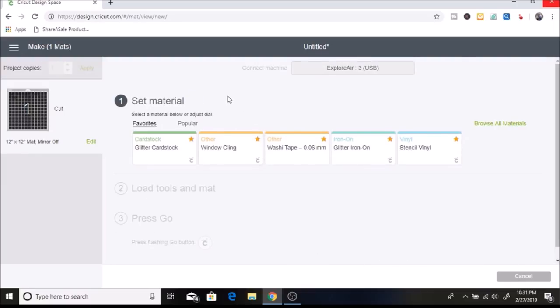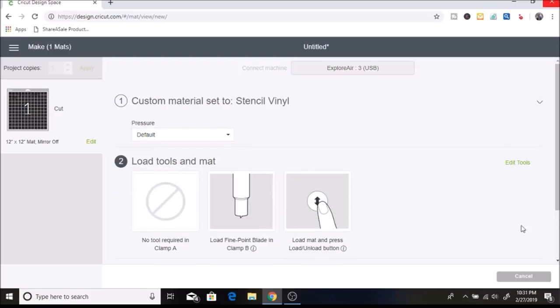And I have my dial set to custom and I like to use stencil vinyl for my stencil material. And I have it set to my favorites but if you don't you just select browse all material and you just search for stencil vinyl. So I am going to select that and then I will show you on my mat how I do this.